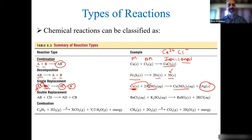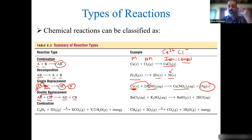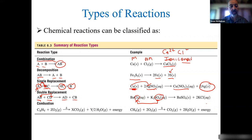Double replacement is a compound and a compound with a switching of partners. I call it the do-si-do. You basically have a switching of partners and now I have a new compound and a new compound. Barium chloride becomes barium sulfate; potassium sulfate becomes potassium chloride — sulfate and chloride switch with one another and form two new compounds.